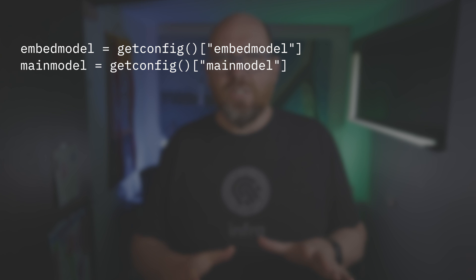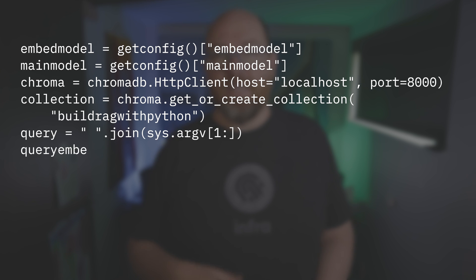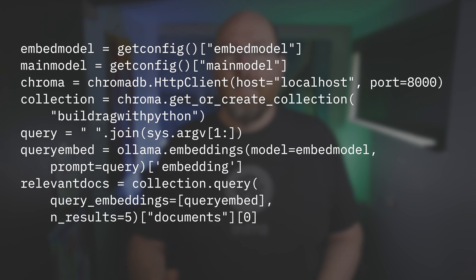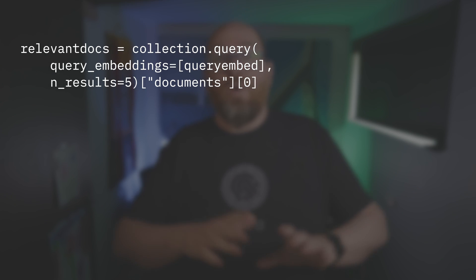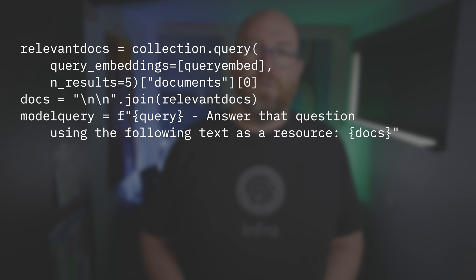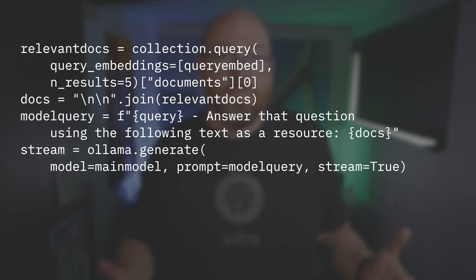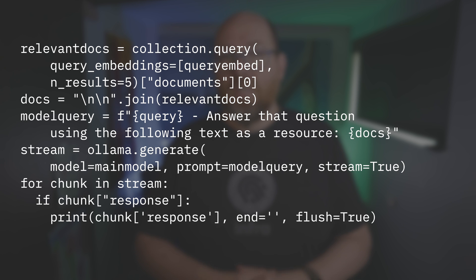Now my database is populated so I can perform my search. There's some initialization up front, like reading in the model names from the config and making the connection to ChromaDB. Then I take the query from the CLI args and create the embedding. Then I just run the query — this is part of the ChromaDB functionality. I can return the top 5 results, or 10, or any other number, and then join all those together into one string. Then I put the original query along with those relevant docs into the prompt that goes to the model. Now I can run ollama.generate, passing in the name of my model, the prompt, and that I want to stream the response. Finally, for each part of the streamed response, print out the token.